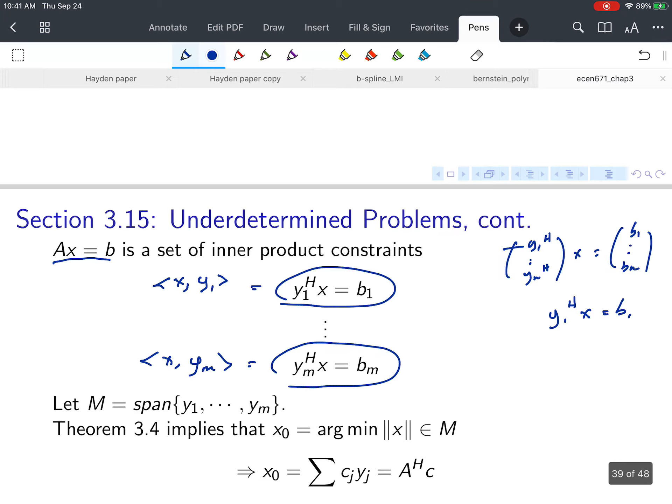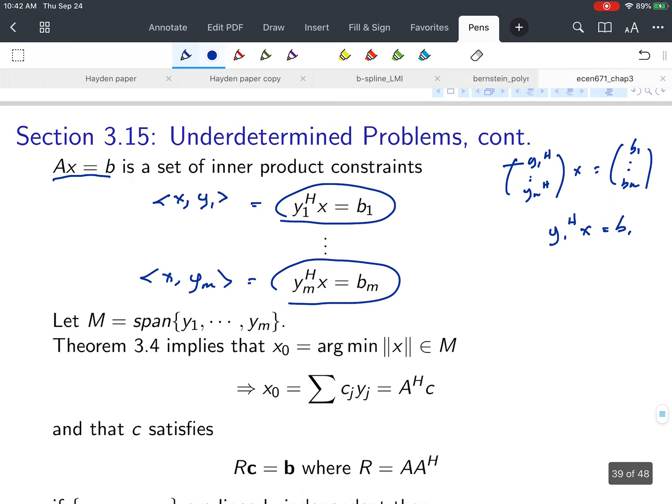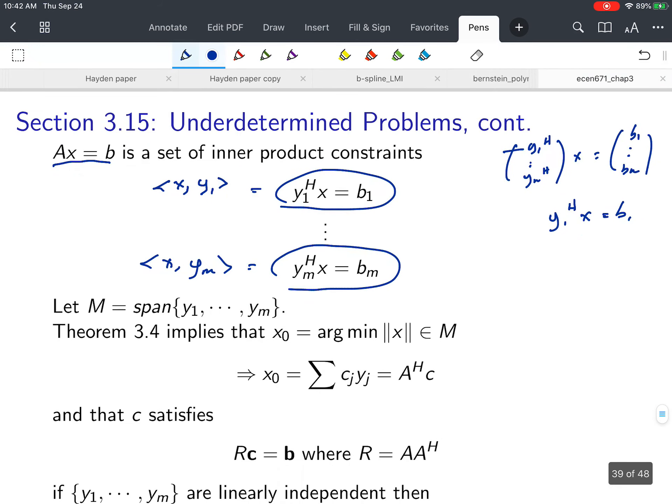So we have inner product constraints ⟨x, y₁⟩ through ⟨x, y_m⟩. This means our dual approximation theorem that we covered in class holds. Let M equal the span of {y₁, ..., y_m}. The dual approximation theorem implies that the solution x₀, which is the argmin of this two-norm, lies inside M.